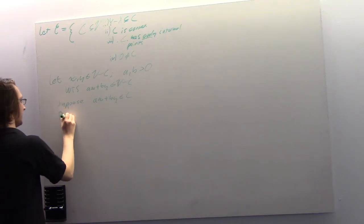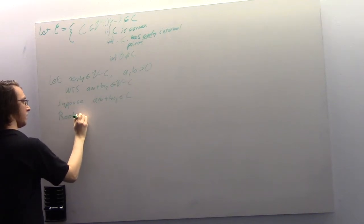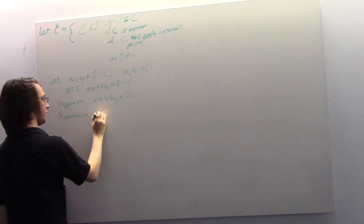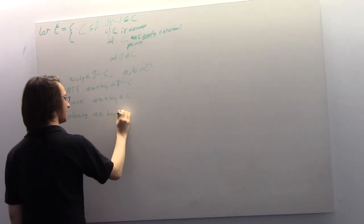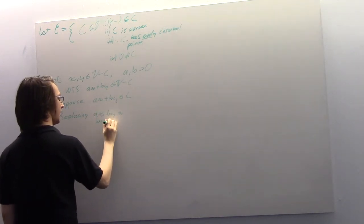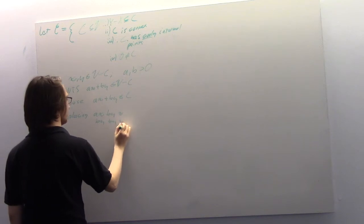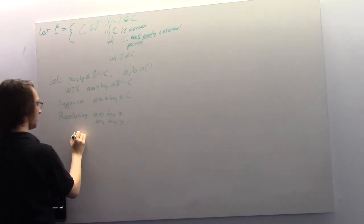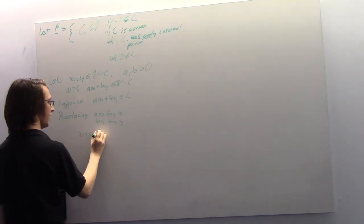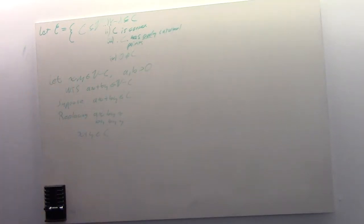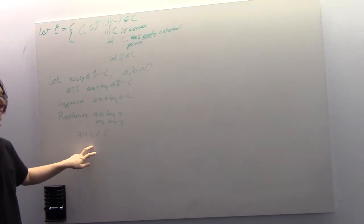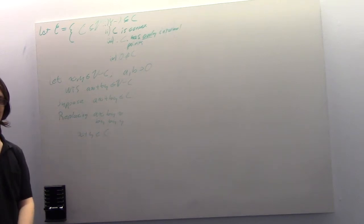Replacing ax by x and by by y, we get x plus y is an element of C. So we took two elements in V minus C, combined them, and got an element of C. That seems weird.